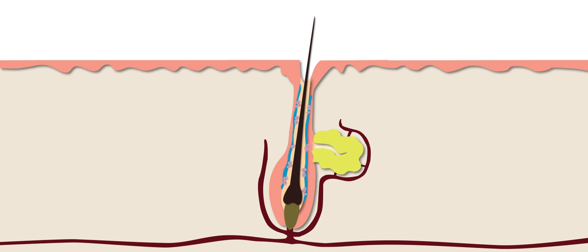Cells that are not expelled from the follicle mix with oil produced by the sebaceous gland, which keeps your skin moisturized. Together, the dead skin cells and oil can form a blockage in the hair follicle. This plug of cells and oil is how most acne begins.